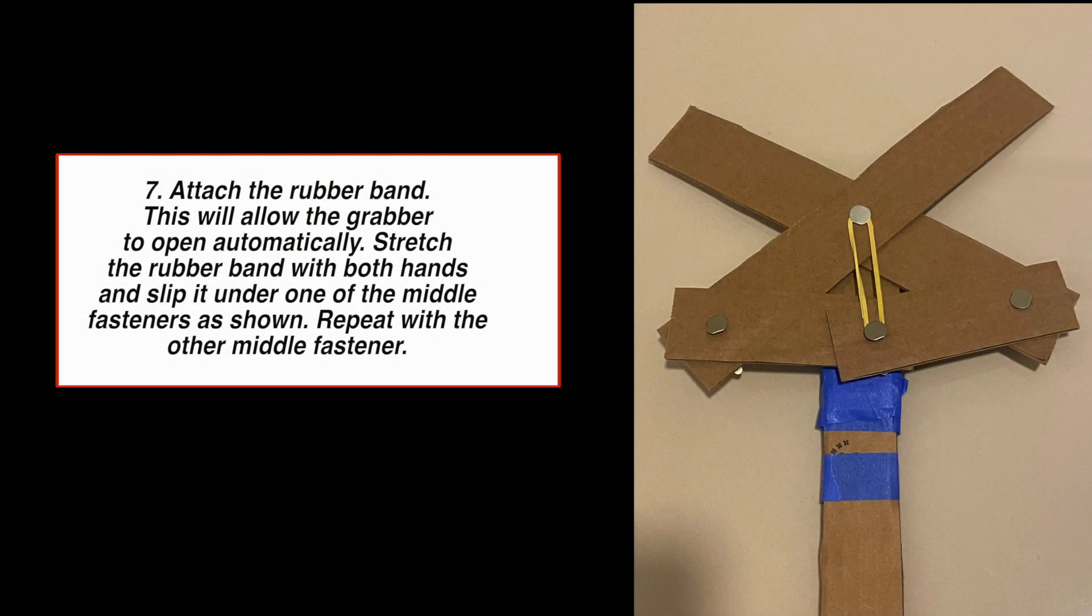Step 7. Attach the rubber band. This will allow the grabber to open automatically. Stretch the rubber band with both hands and slip it under one of the middle fasteners as shown. Repeat with the other middle fastener.